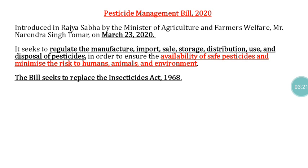The APLM Act 2017 is going to replace the APMC Act — Agricultural Produce Marketing Committee Act 2003. The Pesticide Management Bill was presented by the honorable Agriculture Minister in the Rajya Sabha on March 23, 2020, mainly seeking to regulate the manufacture, import, sale, storage, distribution, use, and disposal of pesticides to ensure availability of safe pesticides and minimize risk to human, animal, and environment. This bill seeks to replace the Insecticide Act 1968.